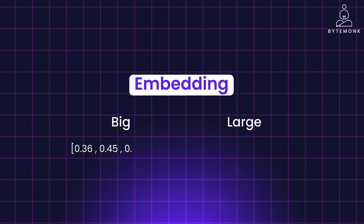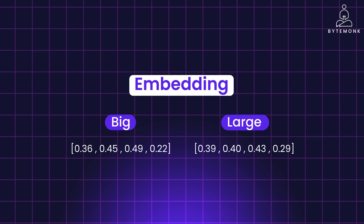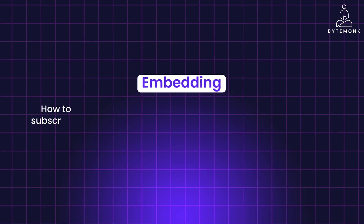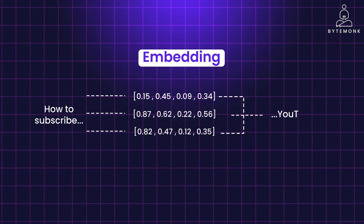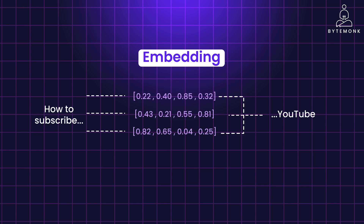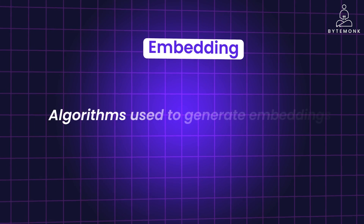The closer the meaning of two words, the closer their embeddings — which is why synonyms are expected to have embeddings very close to each other. We get embeddings by initializing them as a sequence of integers for every word in the dictionary. These embeddings are randomly initialized, so they will likely produce wrong results at the beginning. After encountering errors, we slightly adjust the embeddings to increase the probability of predicting the right output. Through self-supervised training on large amounts of text, the model keeps improving until it consistently predicts the correct output. Note that commercial models use far more complex vectorization methods and specific algorithms.